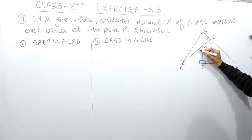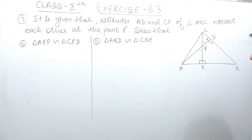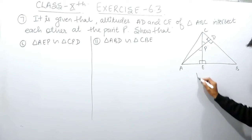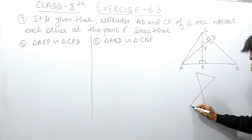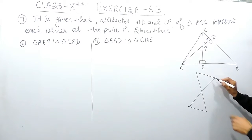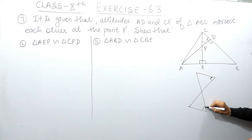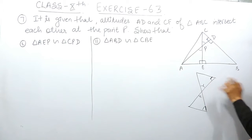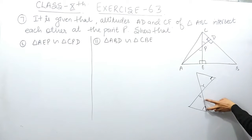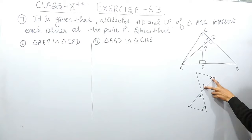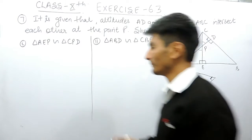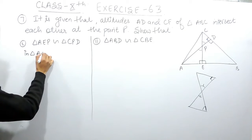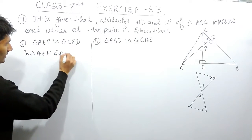Also, angle APE and angle CPD are vertically opposite angles. We know that vertically opposite angles are equal. So two angles in triangle AEP are equal to two angles in triangle CPD, which means these two triangles must be similar. We have to write these same steps formally in the proof.